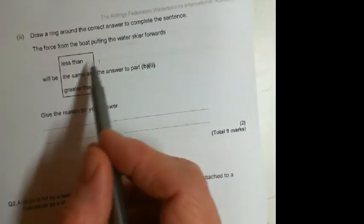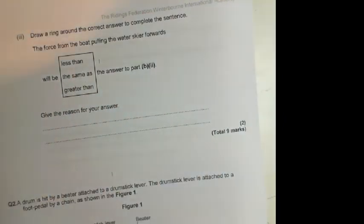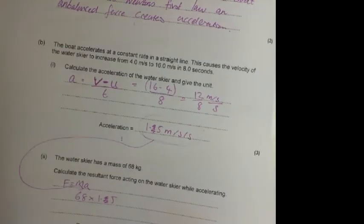Okay, so question three. Draw a ring around the correct answer to complete the sentence: the force from the boat pulling the water skier forwards will be the same, greater, or less than the answer to part b. So you've got this figure here, which is how many newtons you need to accelerate this person here. Okay, but that will be the resultant force.